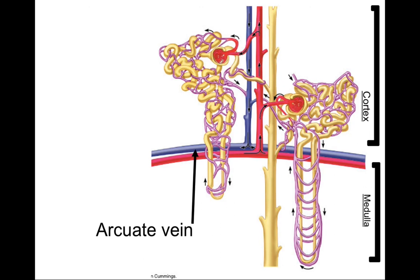With this nephron we have our Bowman's capsule around the glomerulus, our proximal convoluted tubule — one of the first parts of the nephron, convoluted in its shape — then the nephron makes its way down to the thin descending loop of Henle, back up through the thick ascending loop of Henle, up into our distal convoluted tubule, which makes its way out and dumps into the collecting duct. Both nephrons dump into the collecting duct, and many different nephrons will dump into the same collecting duct that takes substances out to the renal papillae.